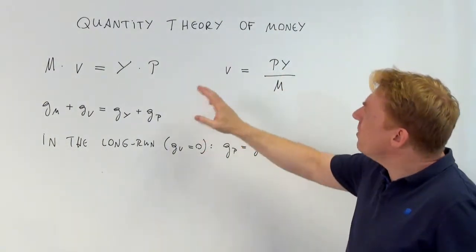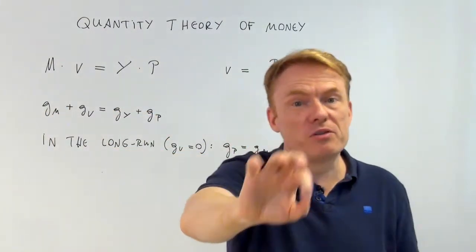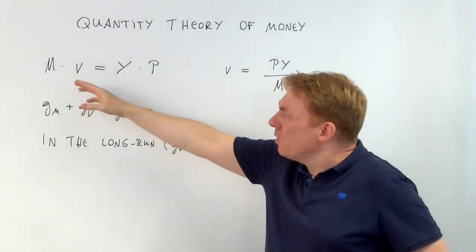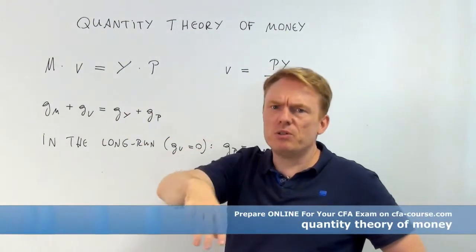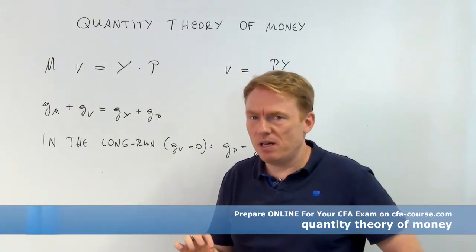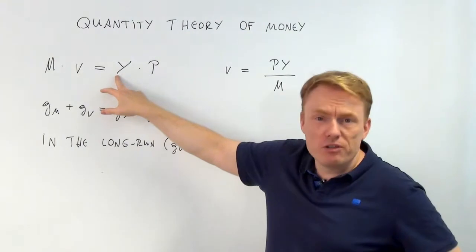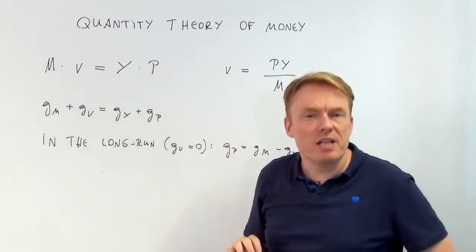So take a look at this equation. It's a very important equation, if not the most important equation of quantity theory of money. We have the money supply, be it M1 or M2 or whatever. We have the velocity of money. I'll explain in just one minute what that would mean. And we have the real GDP, and we have the price level.